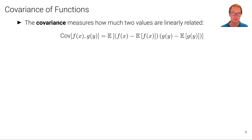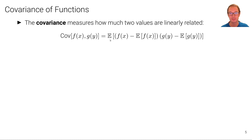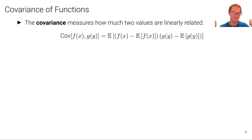The covariance measures how much two values are linearly related. The covariance of f of x and g of y is simply the expectation of f of x minus the expectation of f, times g of y minus the expectation of g of y — the entire product is inside that outer expectation. So we have the expectation of this product of two quantities that are normalized with respect to their weighted averages. This is the covariance.